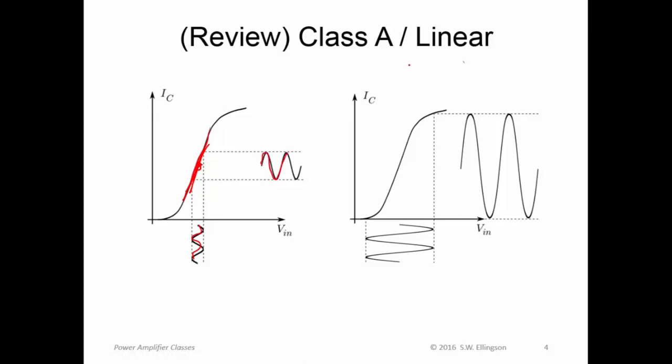But then we also talked about quasi-linear operation. The idea there is to improve the efficiency. Because see, in either case, we're pulling a DC current, which is right about here. And that DC current is about the same. But in the quasi-linear approach, we're getting a much bigger output. So the overall efficiency, that is the magnitude of this output relative to the power associated with this steady current draw, is getting bigger. It's becoming more efficient.